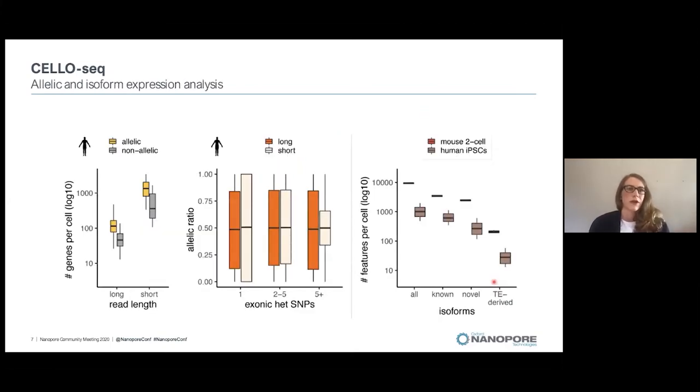We are able to get allelic and isoform expression data of our long read sequencing, which is here compared to short read sequencing data. Especially if we look at a single nucleotide polymorphism over here, you can see that the long read data is less biased than the short read data.